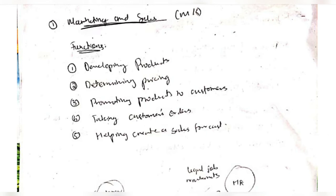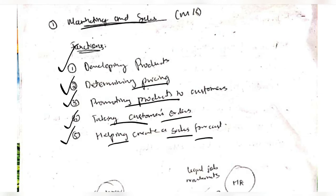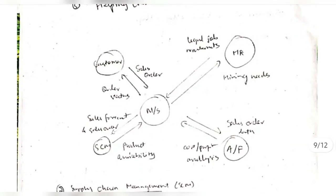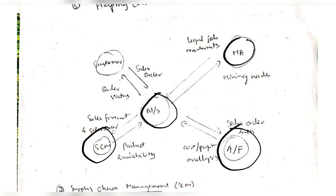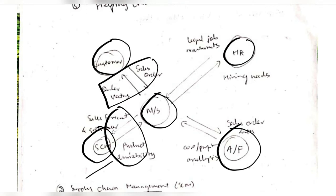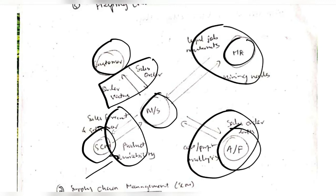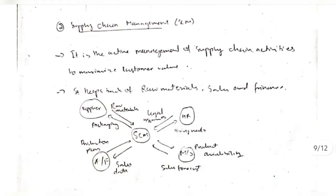The first domain is marketing and sales. Its functions are developing the product, determining the price, promoting the products, taking customer orders, and helping create a sales forecast — forecast means having an expected idea of how many sales will happen in the coming year or month based on previous sales. The connections include marketing and sales with HR, with accounting and finance, with supply chain management, with the customer — including sales orders, sales forecast, product quality, sales analysis, profit and loss — and hiring needs and job requirements.